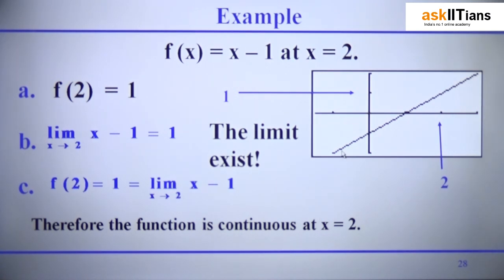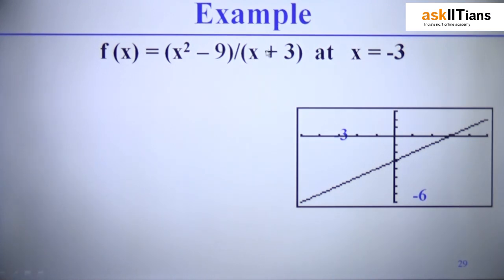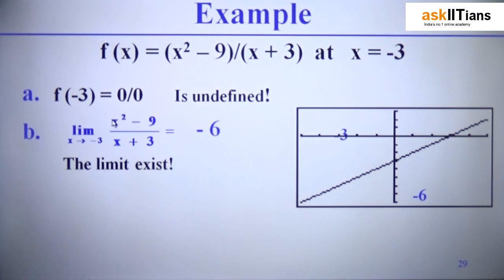Let's do another example to see where a function is discontinuous. Suppose we have f(x) = (x² − 9) / (x + 3). This is a rational function, and the key point with rational functions is that the denominator must never be 0, as division by 0 is undefined. We check the value at x = −3: substituting gives 0/0, which is undefined, so f(−3) is not defined.